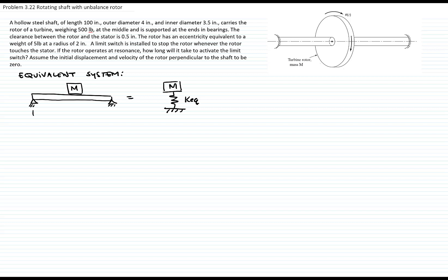We are also given the weight, and the weight is located in the half of the beam. If we go to our tables, we know that the equivalent constant for that type of beam is 48 times the Young modulus times the area moment of inertia divided by the length cubed.